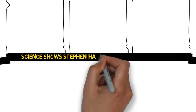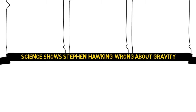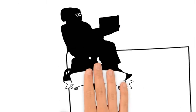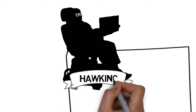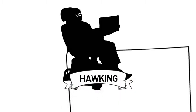Science shows Stephen Hawking is wrong about gravity. Wait, isn't Stephen Hawking one of the greatest scientists ever? Most definitely yes. So how could he be wrong?